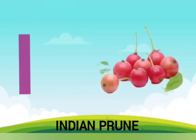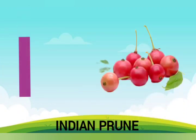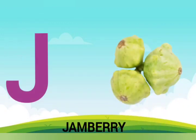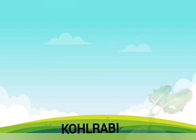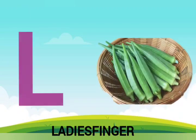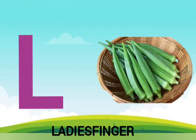I is for Indian prune, Indian prune. J is for jam berry, jam berry. K is for kohlrabi, kohlrabi. L is for lady's finger, ladies finger.